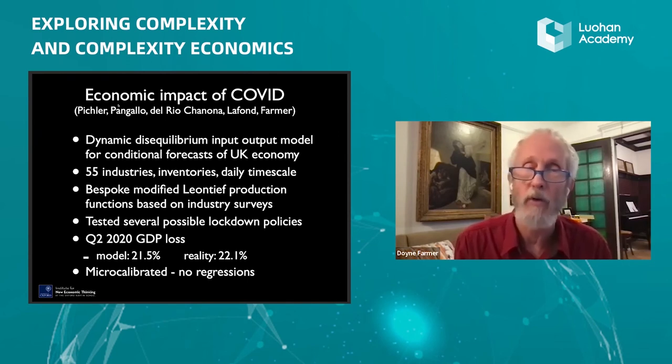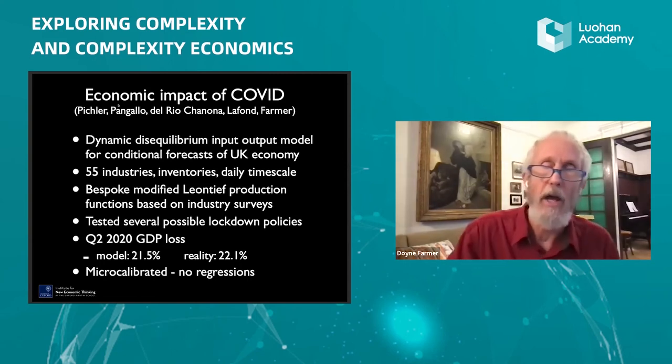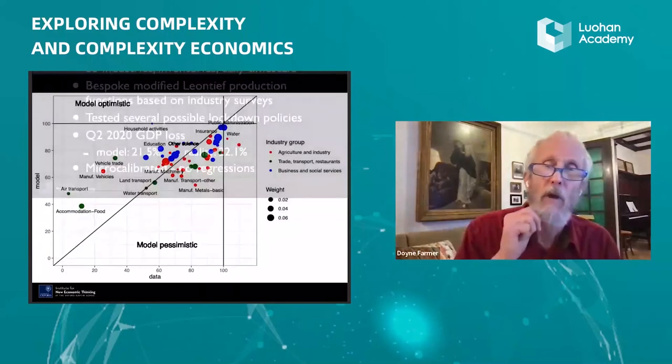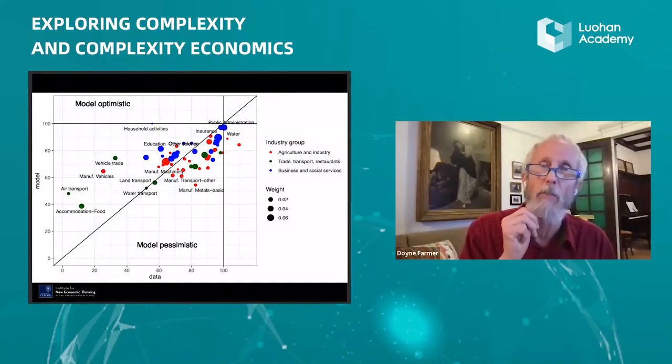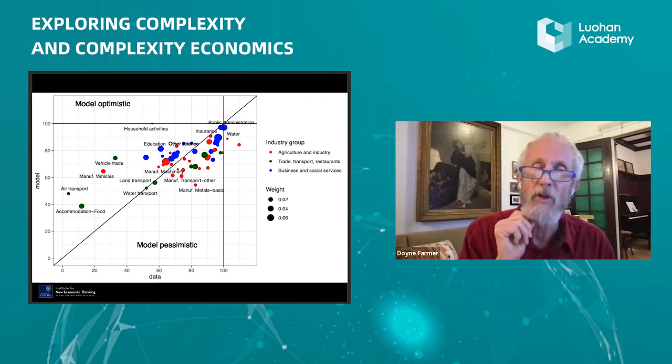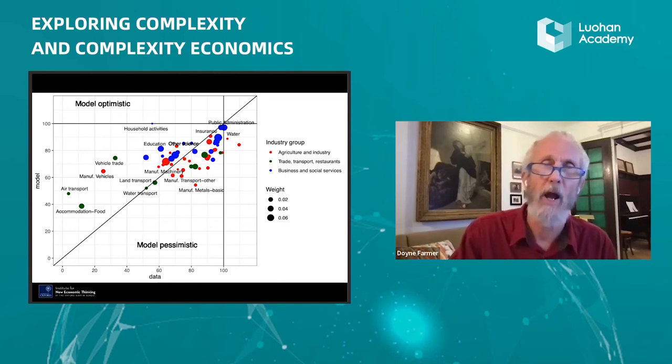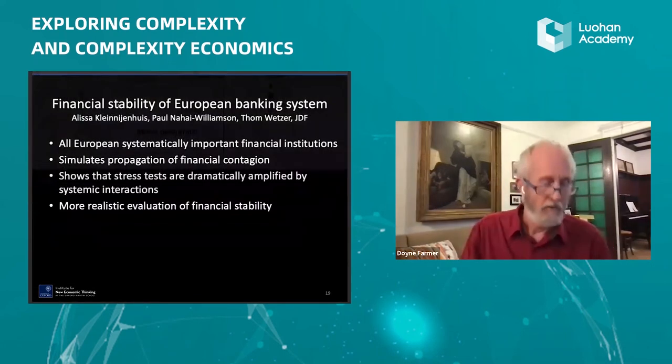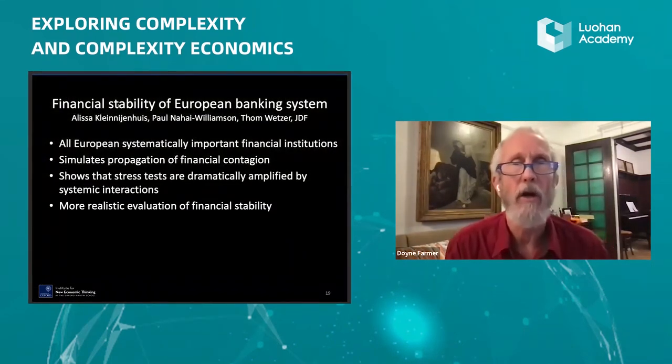We predicted, this is a real-time prediction, we predicted 21.5 percent reduction in second quarter GDP in 2020. In reality, what happened was a 22.1 percent reduction. This model was micro-calibrated without any regressions against target data. And this shows our predictions at the sector level. You can see they're not as accurate as the aggregate level. We did have some luck of things averaging out, but we still had a pretty high correlation industry by industry between what happened and what we predicted would happen.